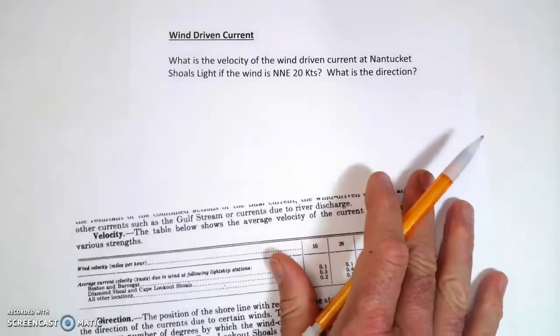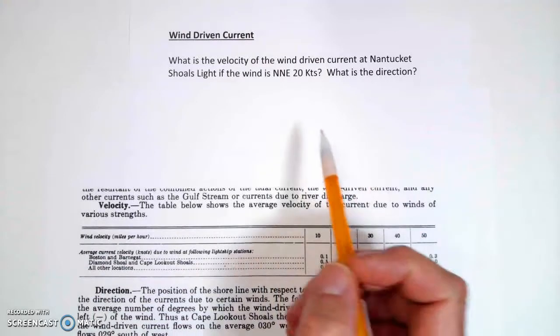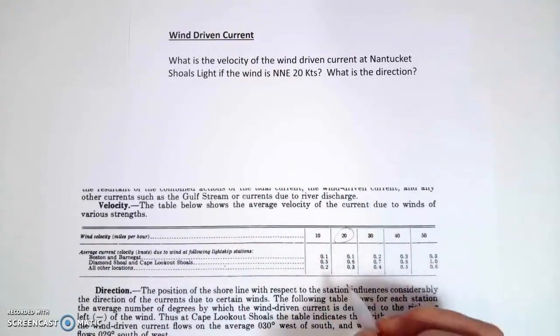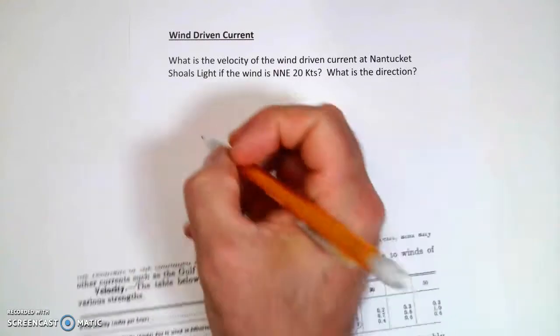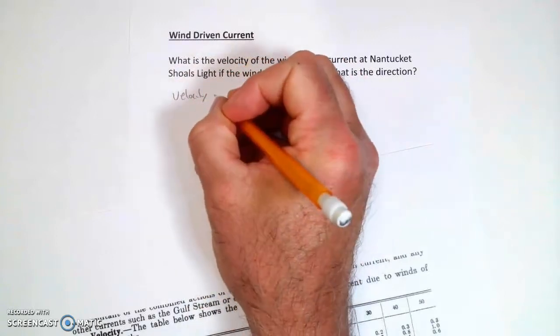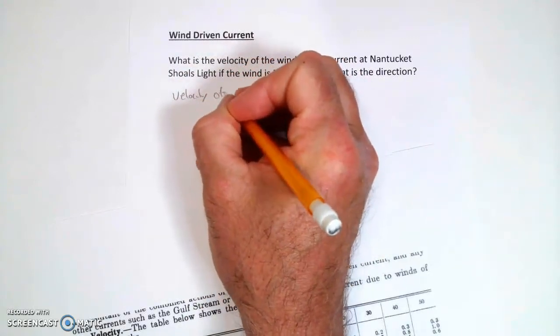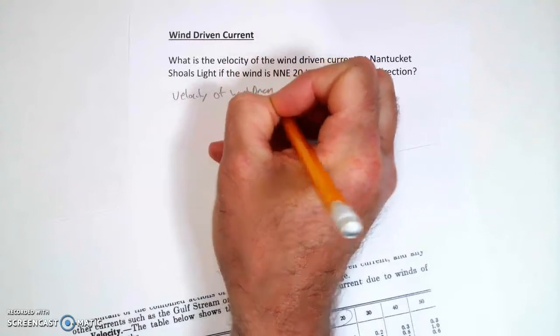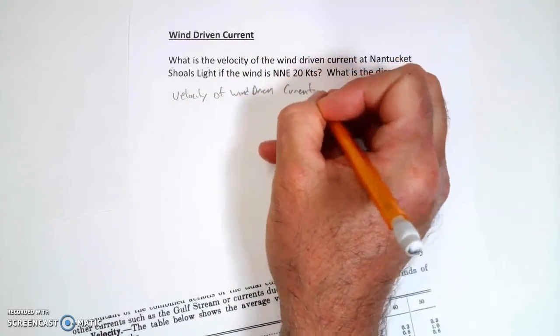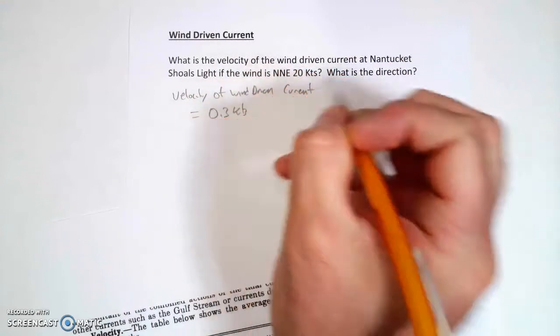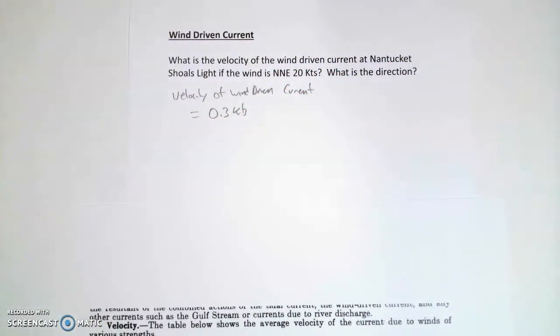So we have, what do they say we had here? 20 knots. So I'm going to go to the 20-knot thing, and I'm just going to go down to the third row, and there it is. So the velocity of the wind-driven current is equals 0.3 knots. Great. So we're off to a good start.